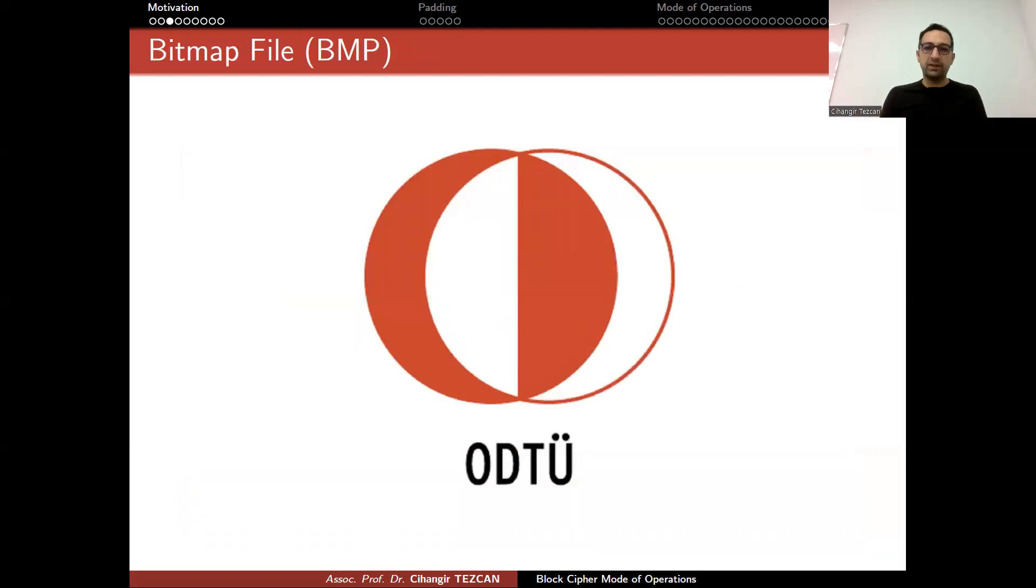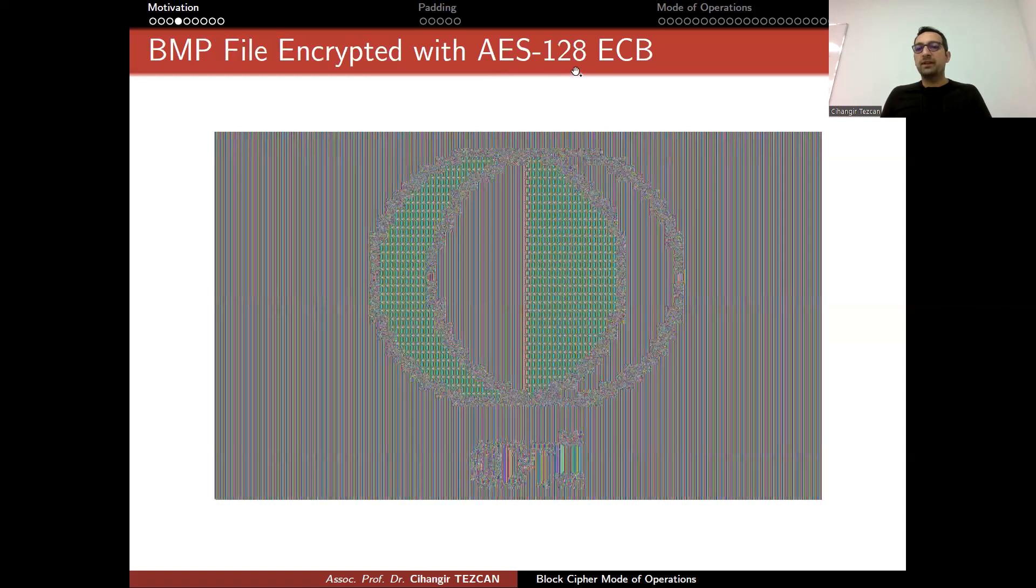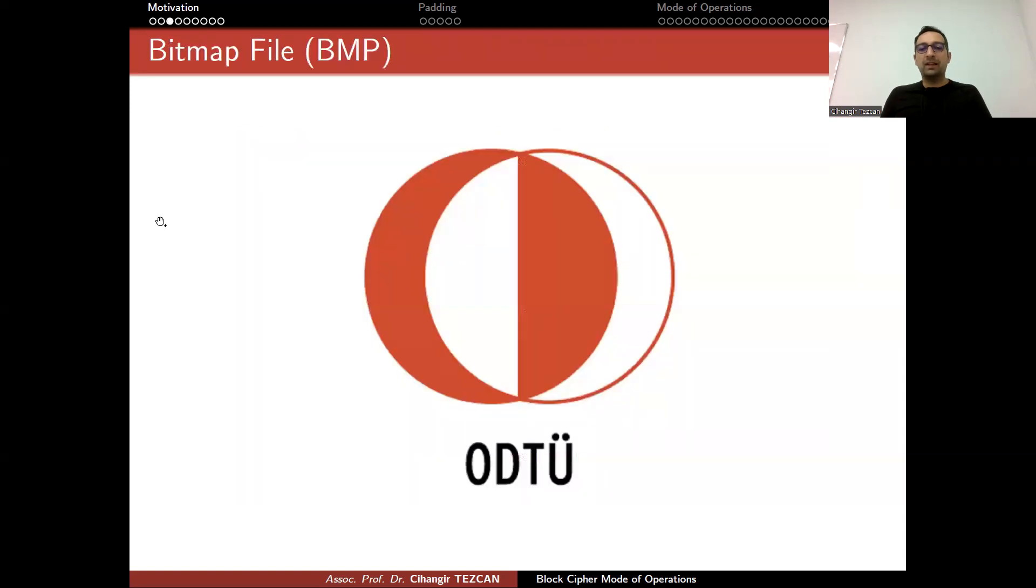So let me show you how this works. In literature, people generally show this using the penguin logo of Linux, but I will use our university's logo in this case. So this is a bitmap file, a BMP file. So it is a rectangle like this. And as you can see, there are too many white pixels. Since you have white pixels next to each other, when you divide this image into blocks, many white pixels will form a single block for the encryption. So if you encrypt this using AES-128 in the ECB mode, this is what you get.